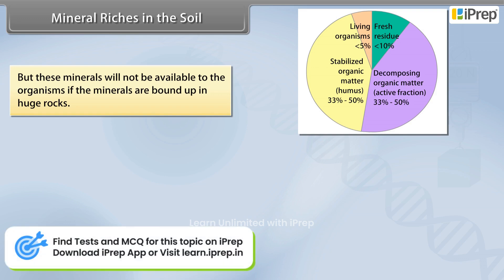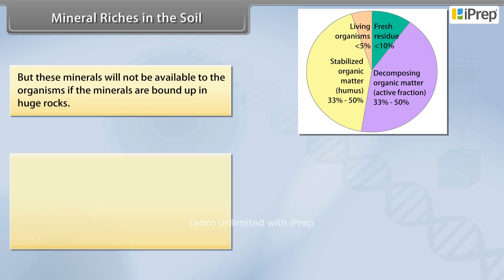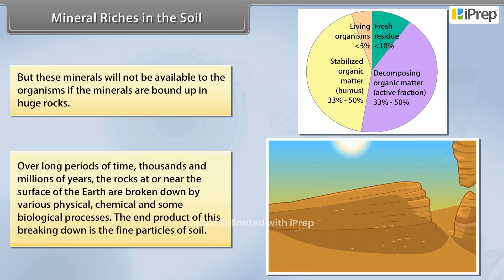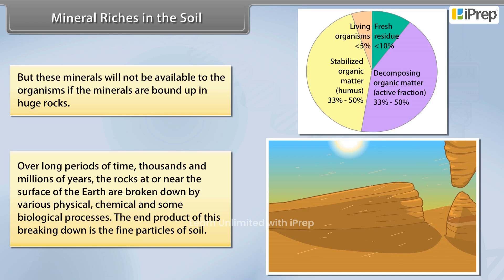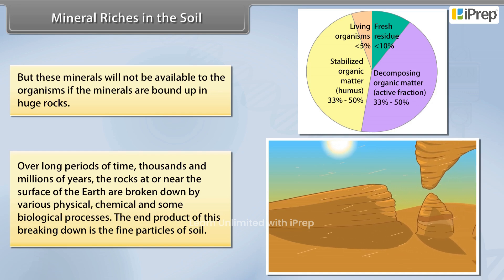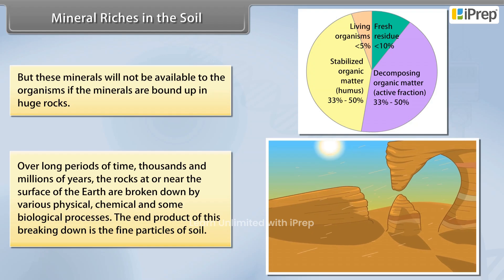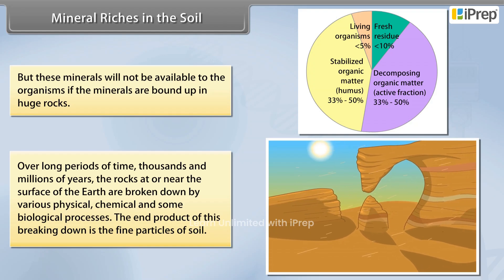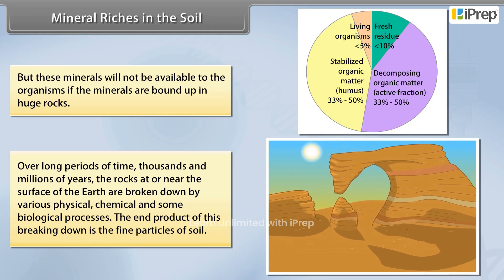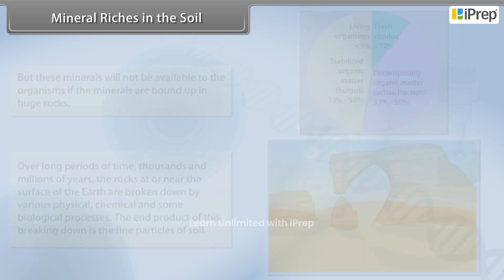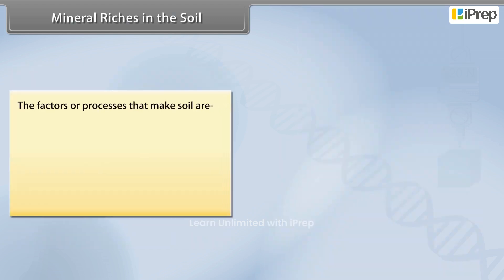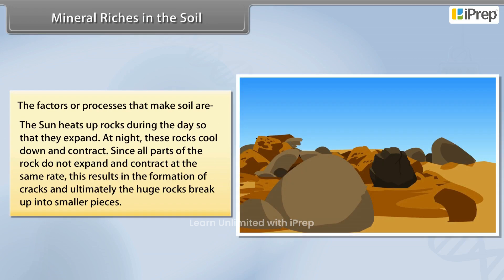Over long periods of time — thousands and millions of years — the rocks at or near the surface of the earth are broken down by various physical, chemical, and some biological processes. The end product of this breaking down is the fine particles of soil.